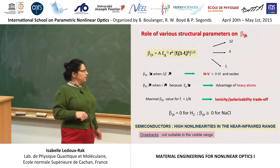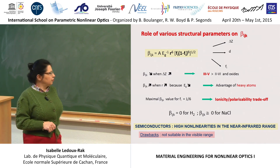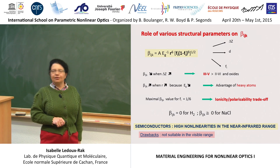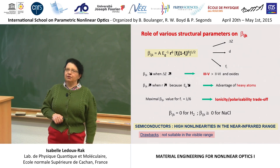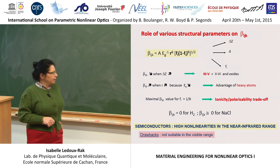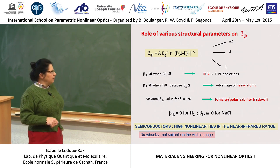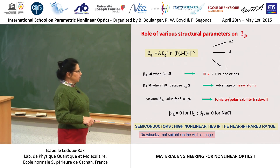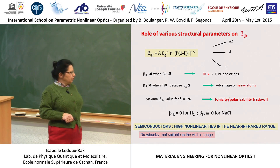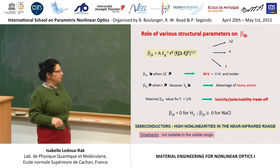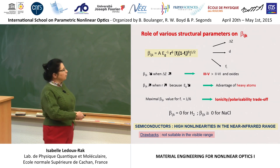Beta will be zero for homonuclear diatomic molecules such as hydrogen, but will also be zero for strongly ionic species such as sodium chloride and lithium fluoride. Beta increases when increasing the interatomic distance, since electrons of the chemical bond are less tightly attached to nuclei and become more polarizable — this gives the advantage of heavy atoms which ensure long chemical bonds. The conclusion also is that in most cases the highest nonlinearities in semiconductors will be found in the infrared range — the main drawback.